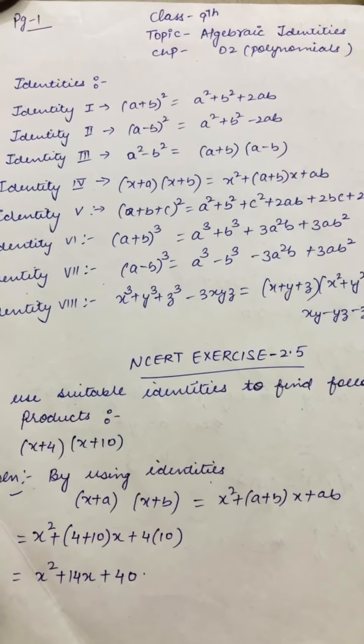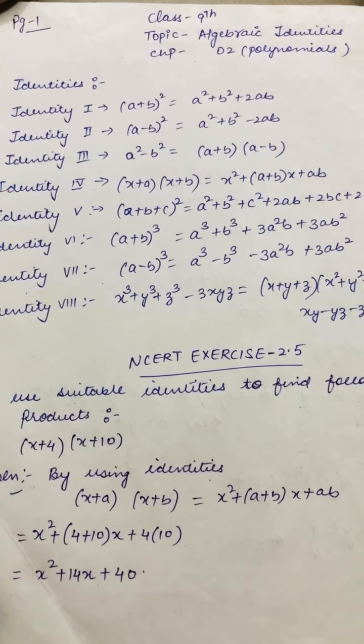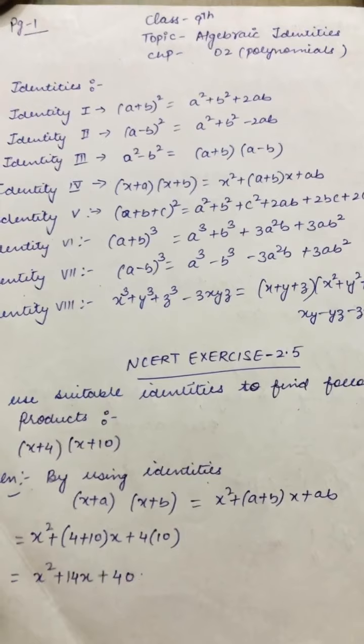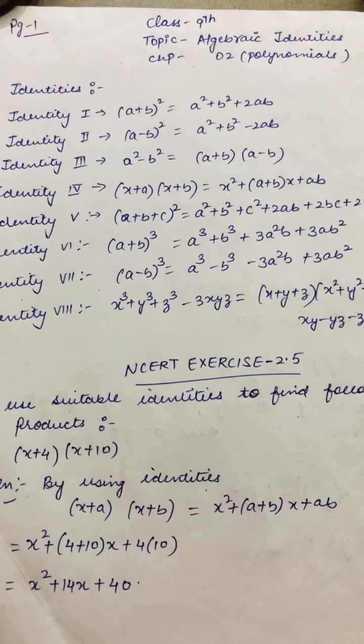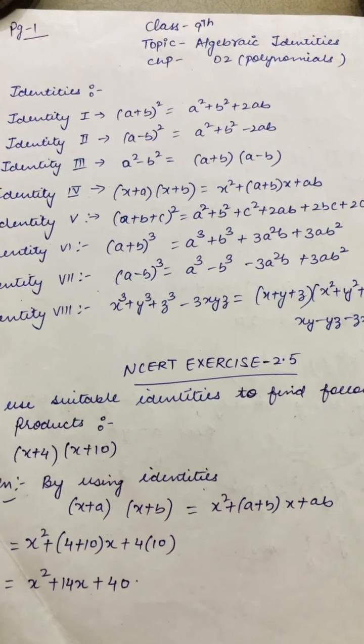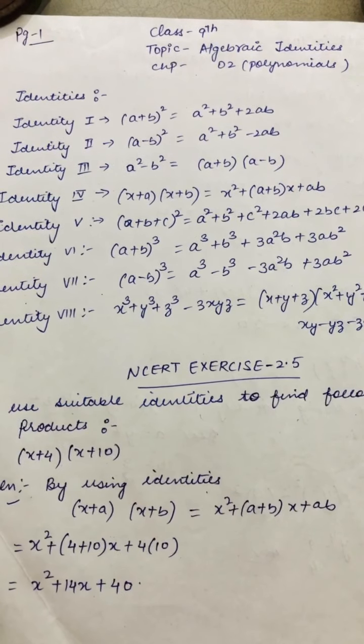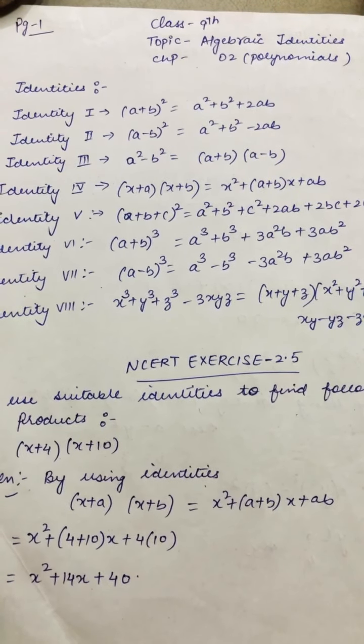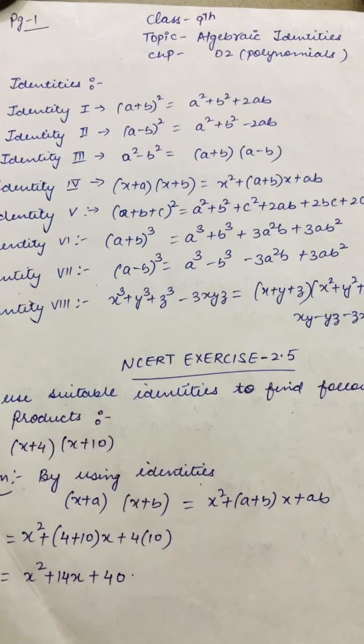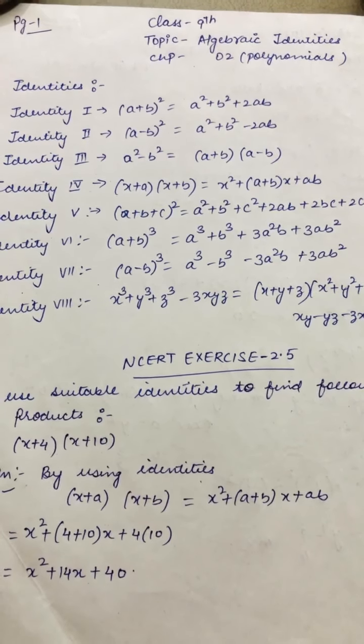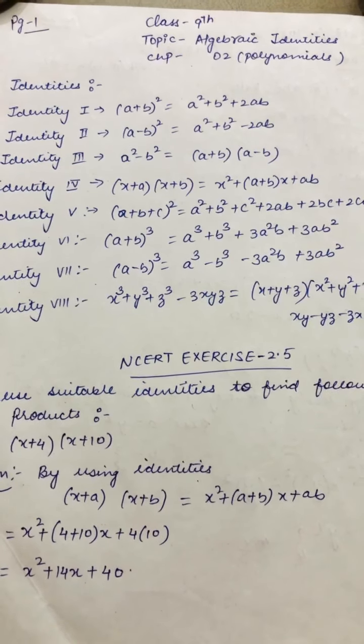So what are you seeing here? That x is the same, and 4 and 10 are constants, they are changing. So which property can be applied? Property number 4. Check it: (x+a)(x+b), where a and b change and x remains the same. The answer is x² + (a+b)x + ab.